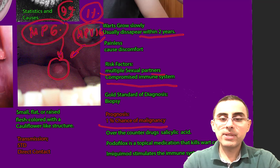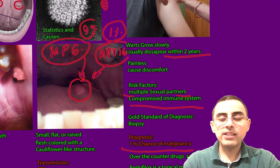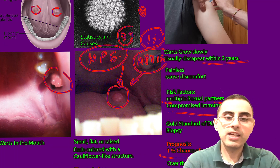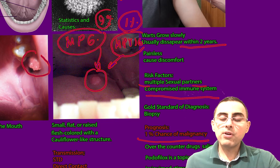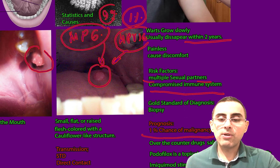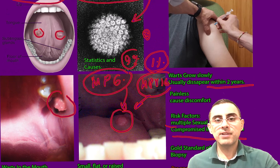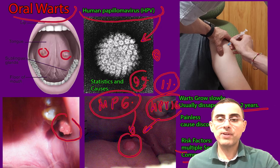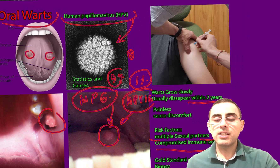Treatment can include over-the-counter drugs that contain salicylic acid. Small and solitary warts can be treated with salicylic acid, but it is not effective when there are multiple warts. Podofilox is a topical medication that can kill wart cells. Imiquimod stimulates the immune system and is also considered effective. If the warts are large enough or there is any risk of cancer, surgery is recommended and indicated.